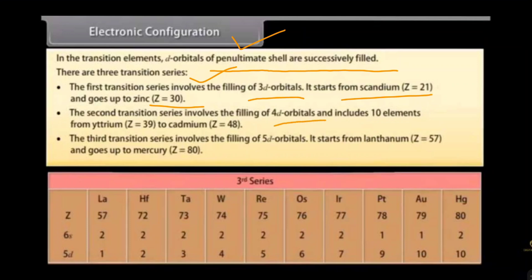The second transition series involves the filling of 4d orbitals and includes 10 elements — each d series contains 10 elements — from yttrium at Z=39 to cadmium at Z=48. The third transition series involves the filling of 5d orbitals. The series are also named as the 3d series, 4d series, and 5d series.